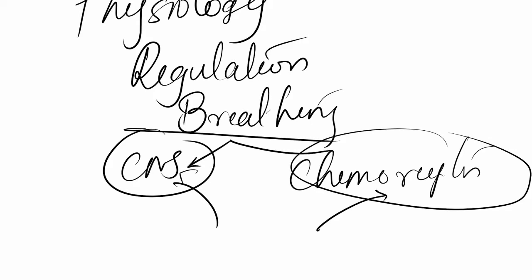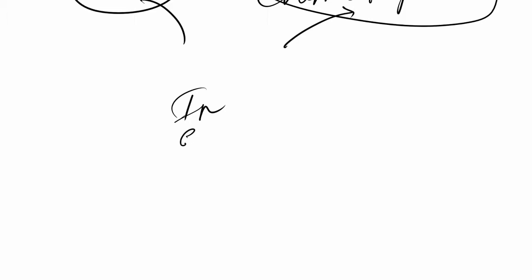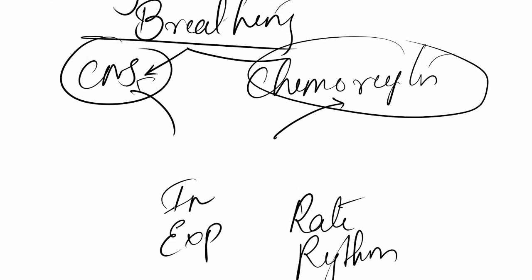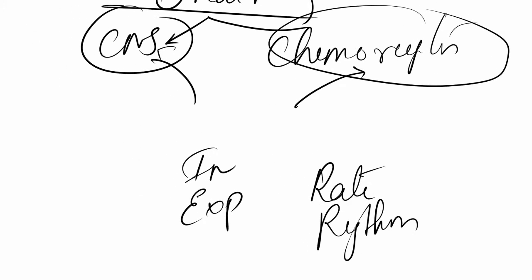When we talk about regulation of breathing, we have something to do with inspiration, something to do with expiration, then the rate of breathing, and the rhythm of breathing. Who controls this? The brain — everyone knows the brain controls all this. But how does it do it? Where does the signal actually come from, and which part of the brain does that? That's what we are going to look at in this video.